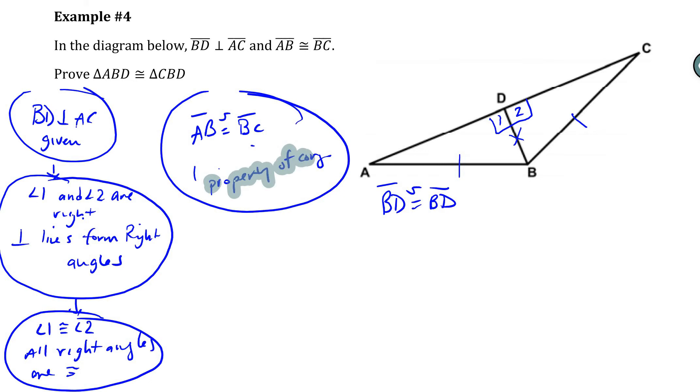Actually, this was given. My bad. I got ahead of myself there. AB and BC are congruent because of given. And BD is congruent to BD by the reflexive property of congruence.